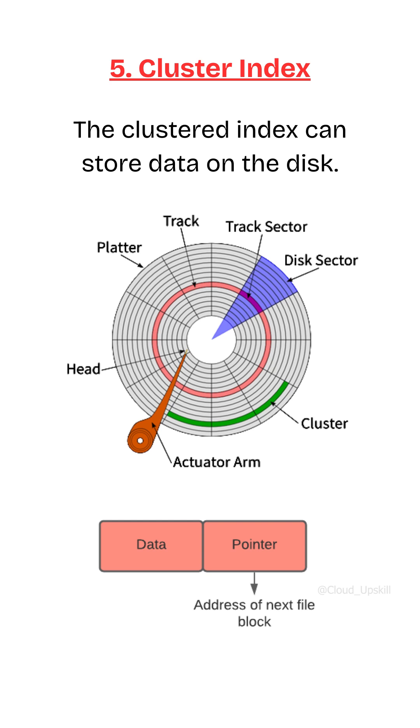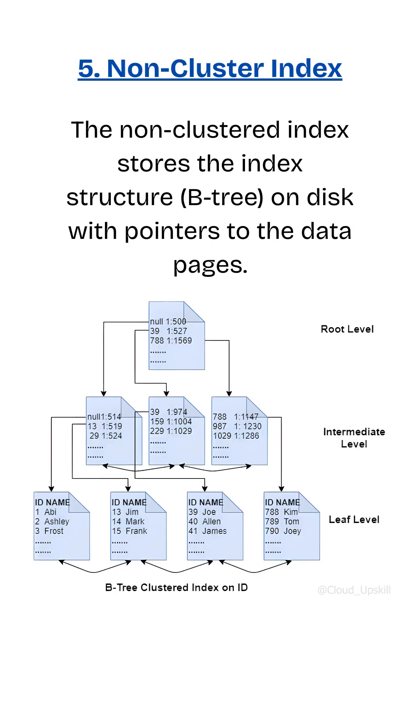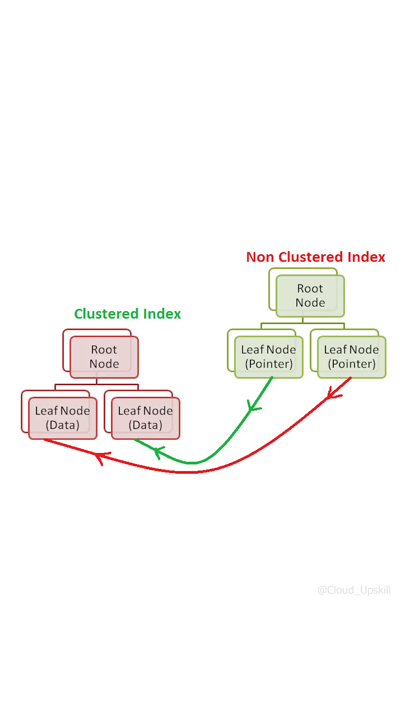Non-cluster index stores in the index structure B-tree with pointing to the data pages. It stores both index value and pointing to the actual row in the separate data page. The leaf nodes in cluster index actually contain the data itself.